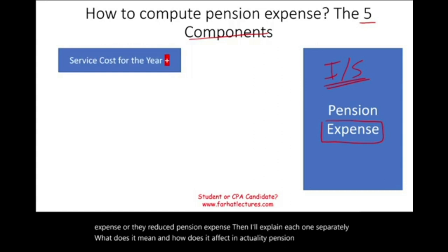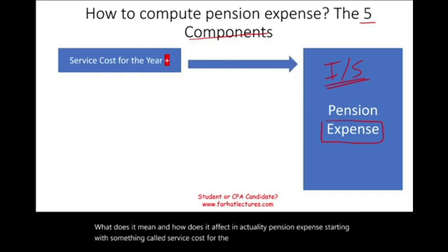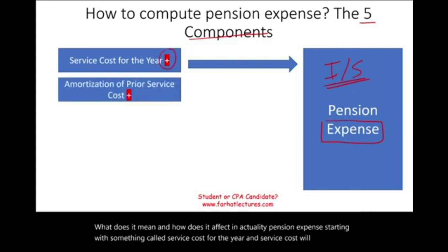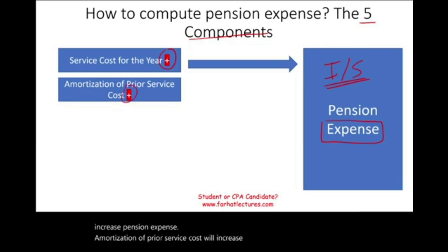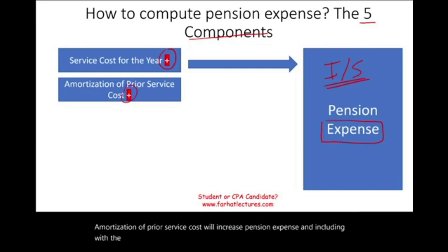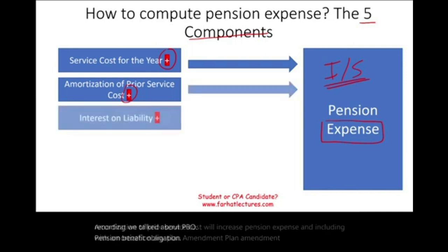Starting with service cost for the year — service cost will increase pension expense. The second component is amortization of prior service cost, which will also increase pension expense, including any plan amendment. Plan amendment means plan changes.